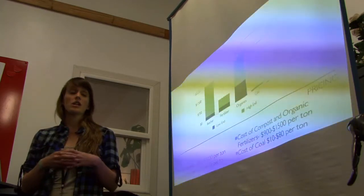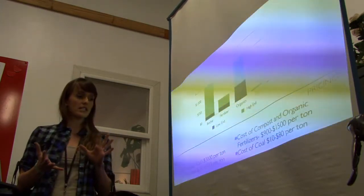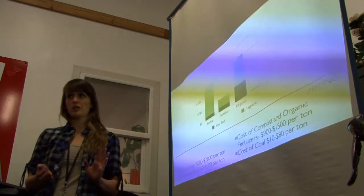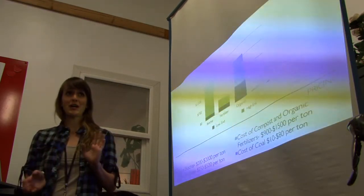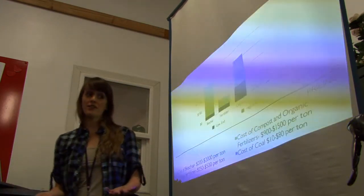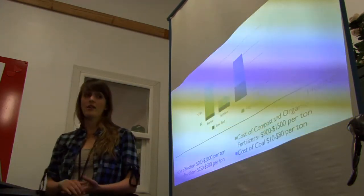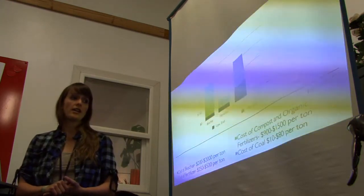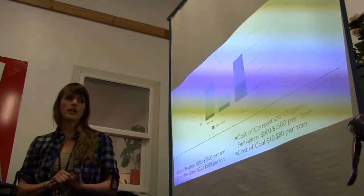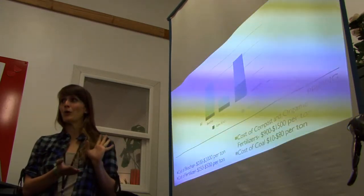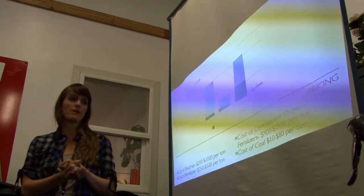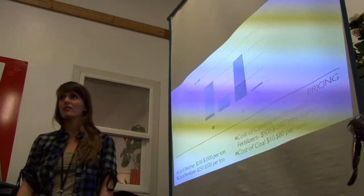The cost of fertilizer on the other hand is about $250 to $500 per ton, with outliers on either side. The cost of compost and organic fertilizers is much higher than the non-organic, and that's about $900 to $1,500 per ton. Just to compare, the cost of coal, if we use this as energy instead of as a soil amendment, is only about $10 to $80 per ton.